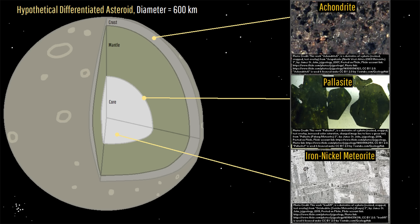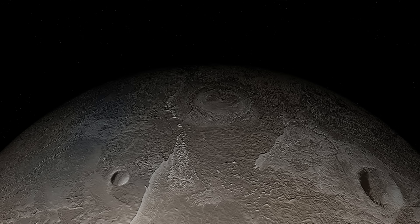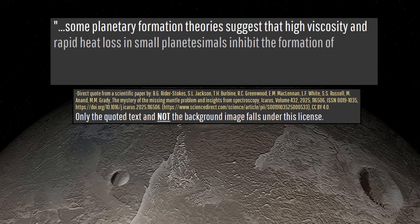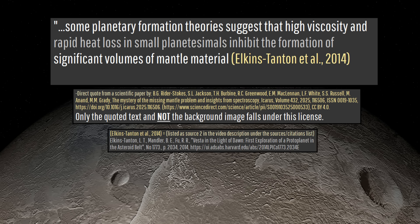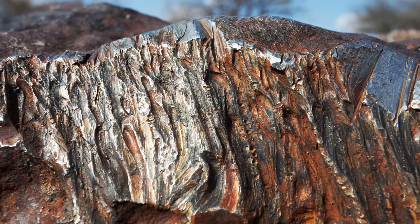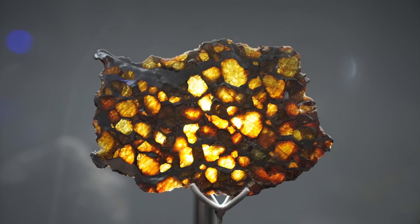Another idea: perhaps our current models of asteroid differentiation are wrong, and per a direct quote from a cited scientific paper, some planetary formation theories suggest that high viscosity and rapid heat loss in small planetesimals inhibit the formation of significant volumes of mantle material — Elkins-Tanton et al., 2014 — so only low quantities of dunitic material might be present in asteroids. Whichever of these is the case, or perhaps some hypothesis which has not been made yet, the solving of this unanswered scientific problem will help explain so much about our early solar system.